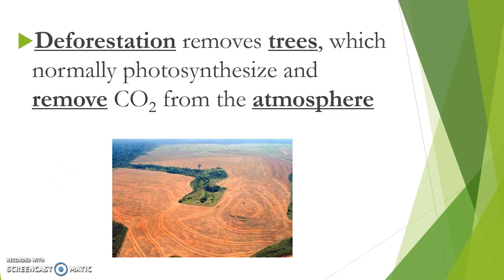Deforestation is something we don't always relate to the carbon cycle, but it has a huge impact on whether we're able to remove carbon from the atmosphere. When you deforest, what you're cutting down is a tree — a producer — and producers are one of the only organisms capable of extracting CO2 from the atmosphere. If you get rid of the trees, you're cutting off the lungs of the earth and getting rid of the only organisms capable of keeping balance between carbon moving in and out of the atmosphere.